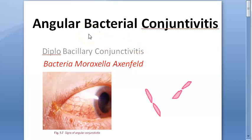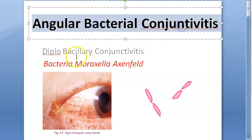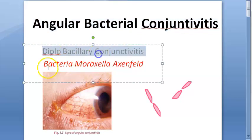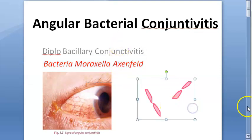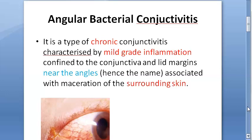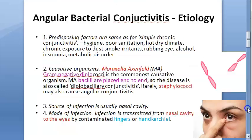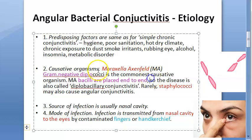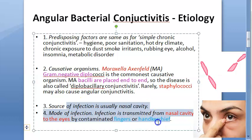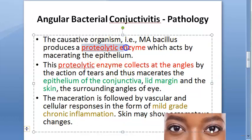In recap: angular bacterial conjunctivitis (ABC) is caused by diplobacilli, Moraxella axenfeld. It is a chronic conjunctivitis with mild-grade inflammation near the angles. The surrounding skin around the angle is also involved. Predisposing factors include poor hygiene. The organism is gram-negative diplobacilli; rarely staphylococcus. Source of infection: nasal cavity. Mode: contaminated fingers or handkerchief.